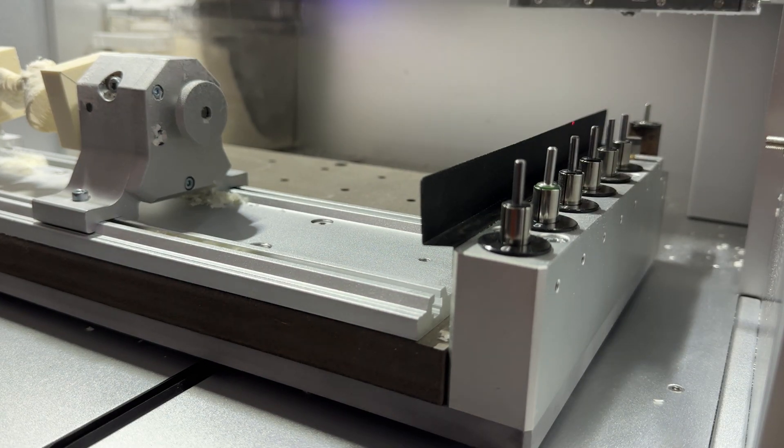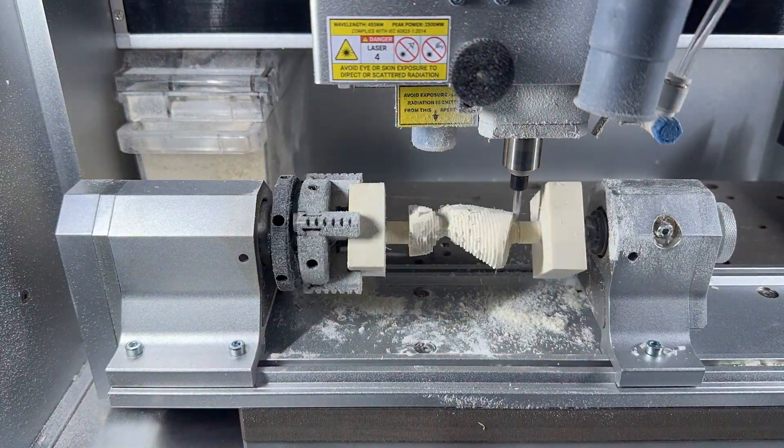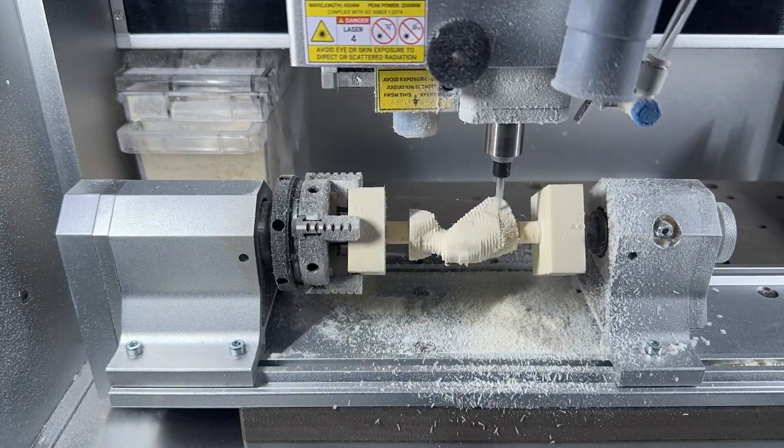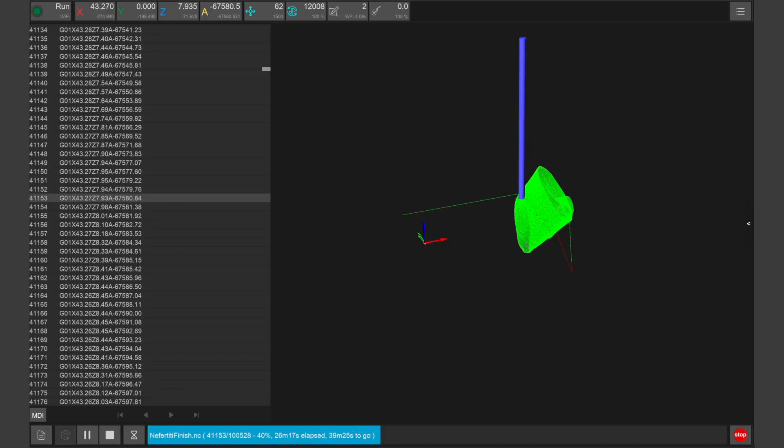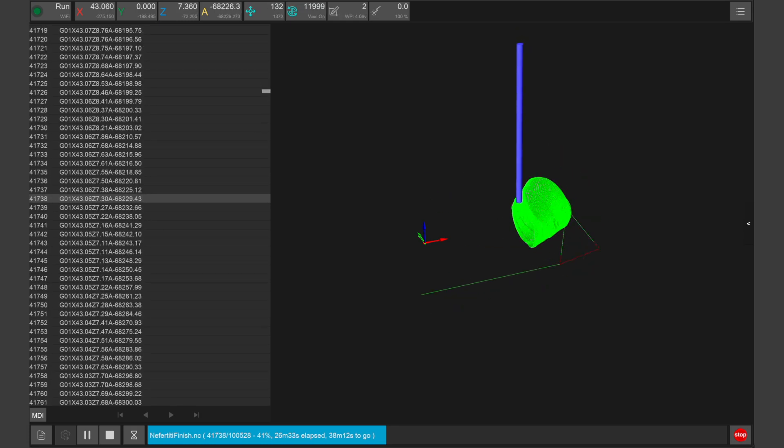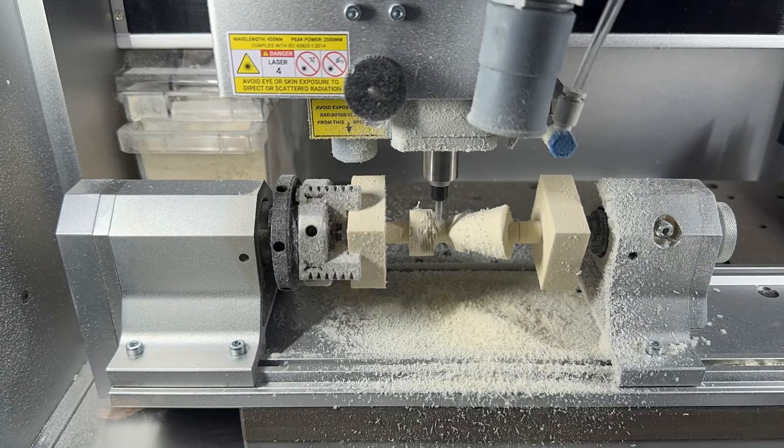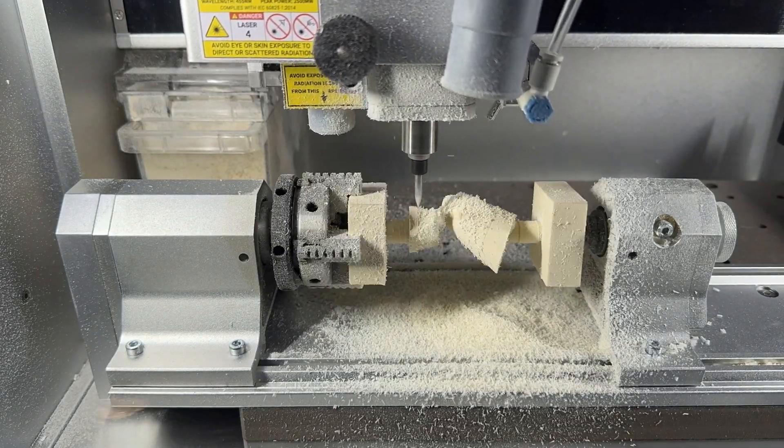The Carvera will then automatically switch to tool 2 to cut the fine detail feature of this design. Sometimes it can be difficult to see the fine cuts that the Carvera is machining, but again you can monitor what's going on live in the controller app. The runtime for the finishing file will be approximately 50 minutes.